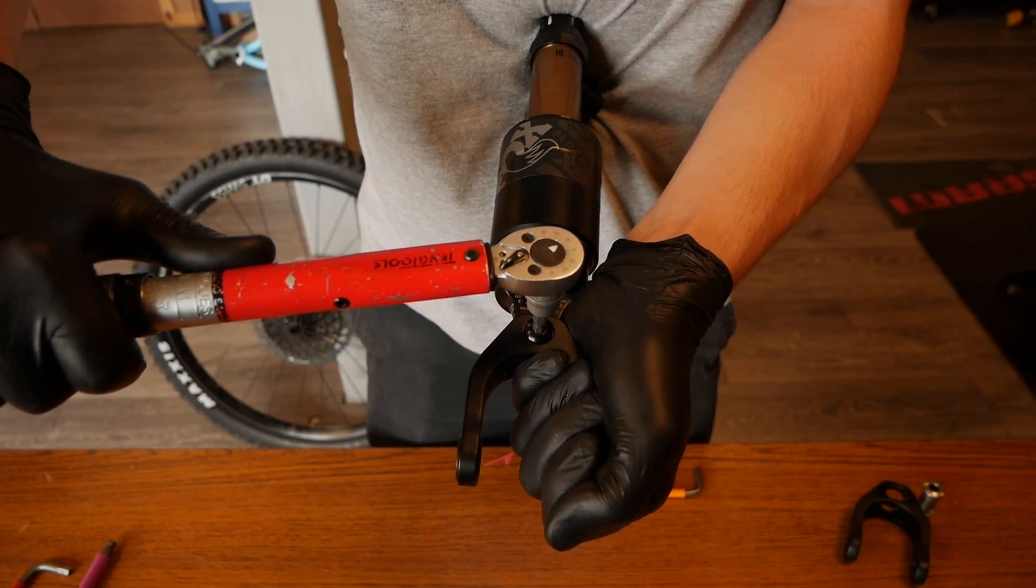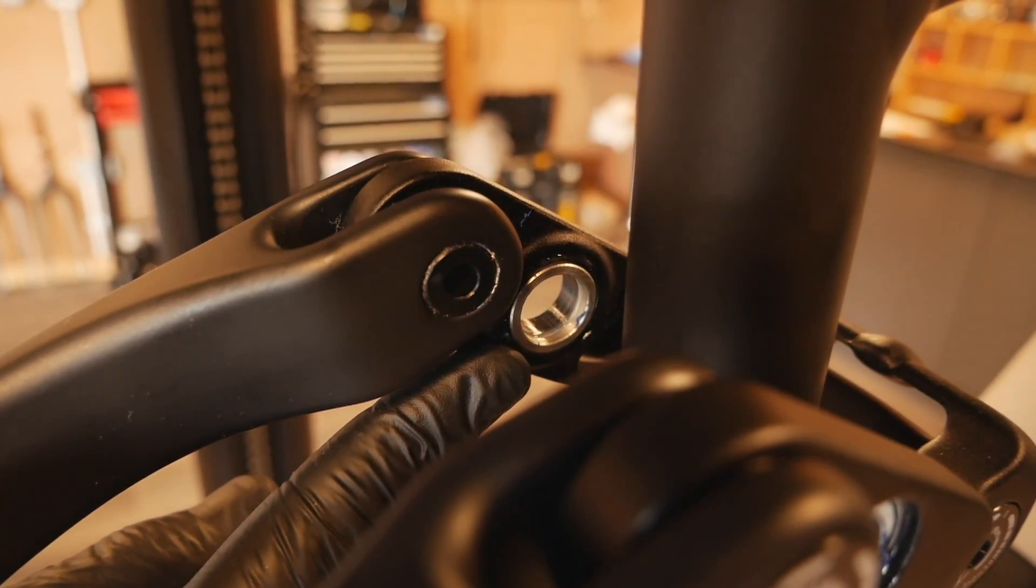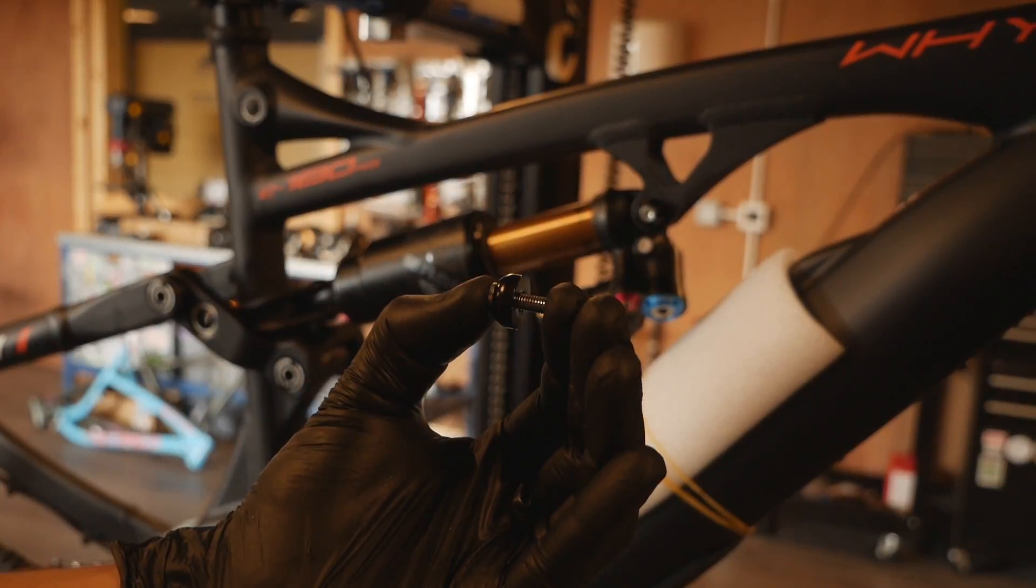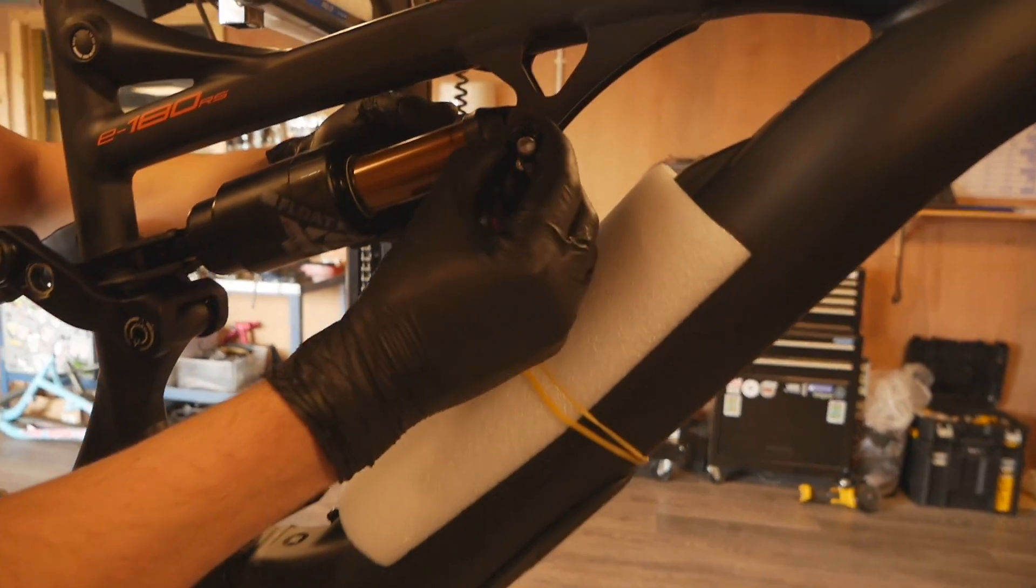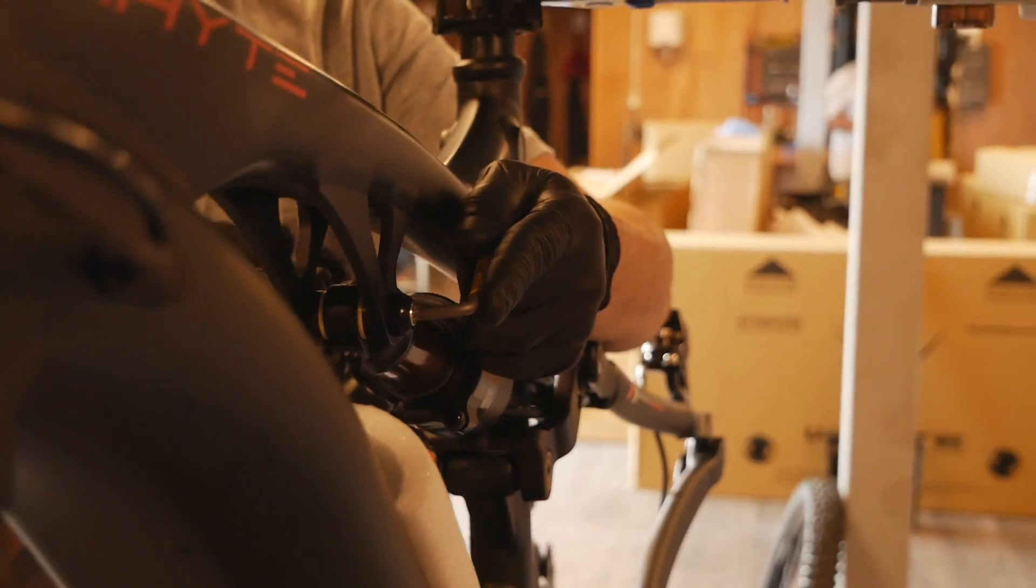You will need to brace the shock to prevent it from spinning. When reinstalling back into the frame, make sure the shield washers are still in place. Then using the mounting hardware for the top of the shock, tighten using your T25 to 6 newton meters.